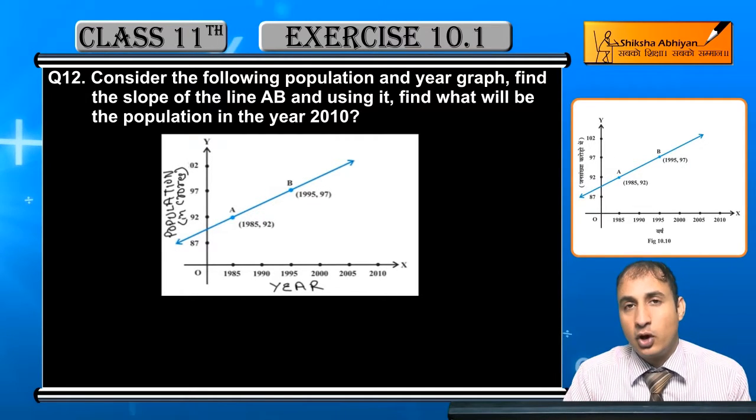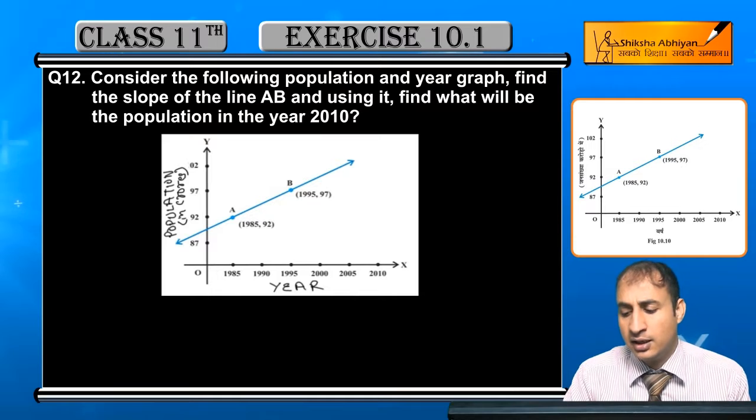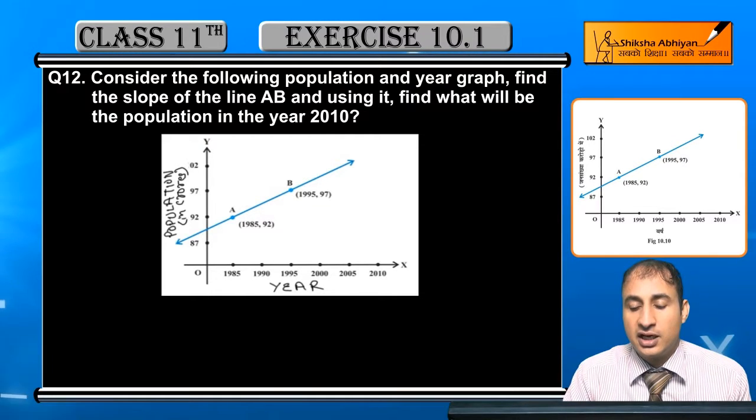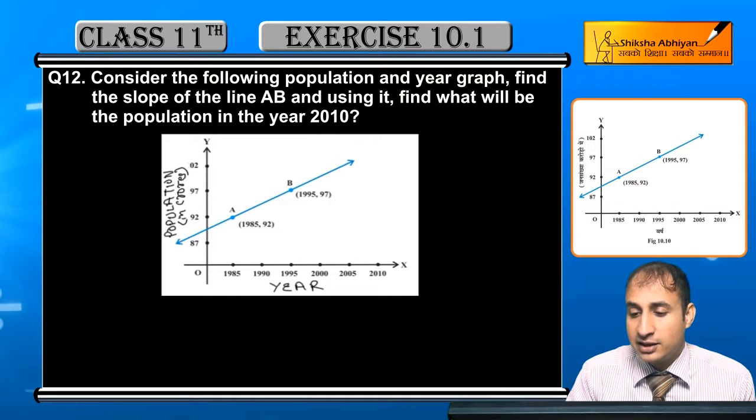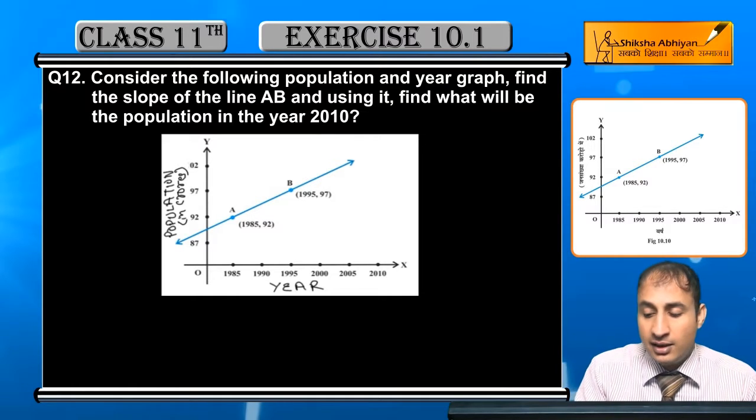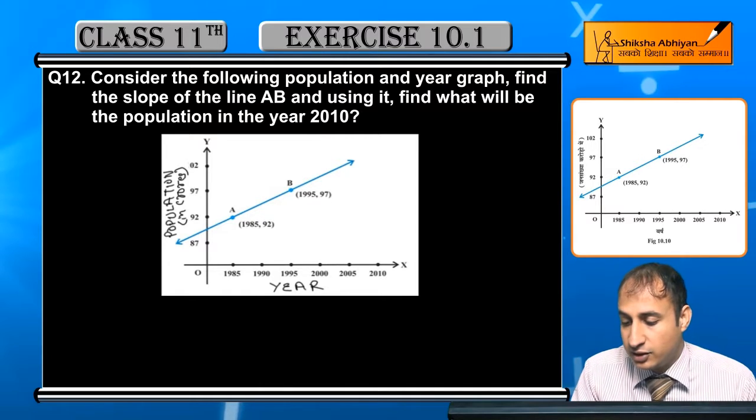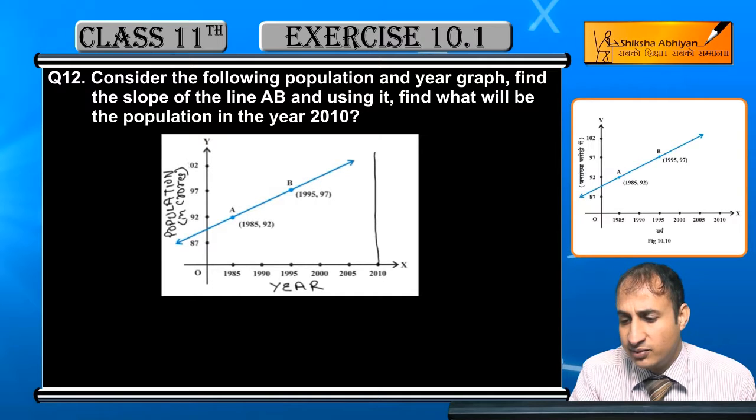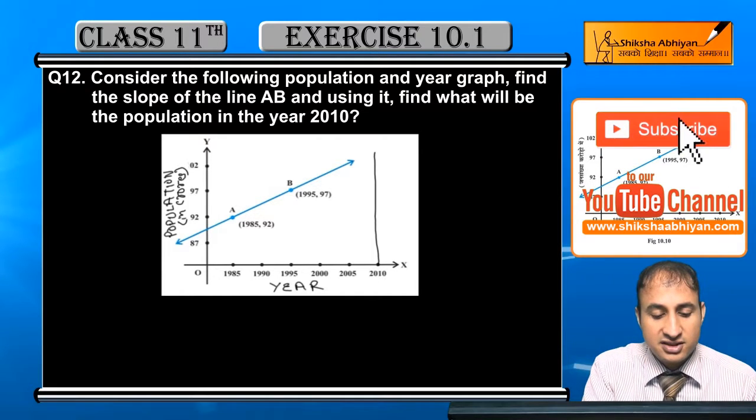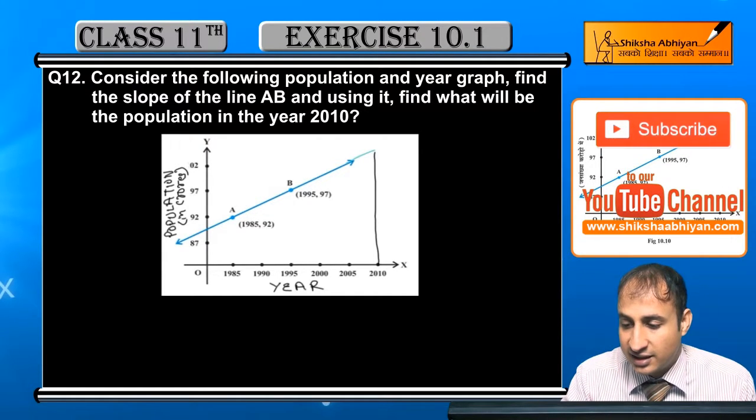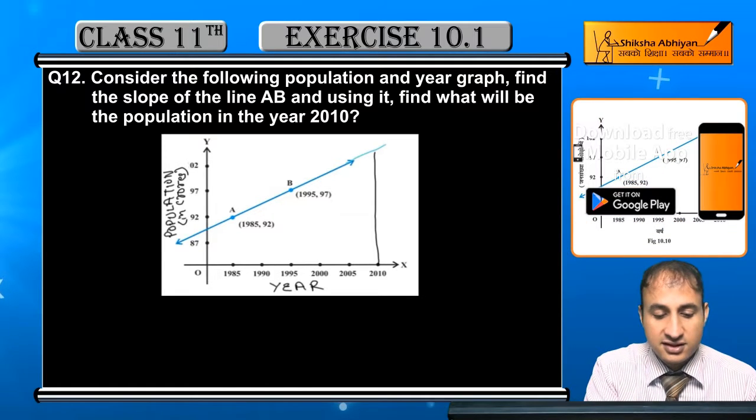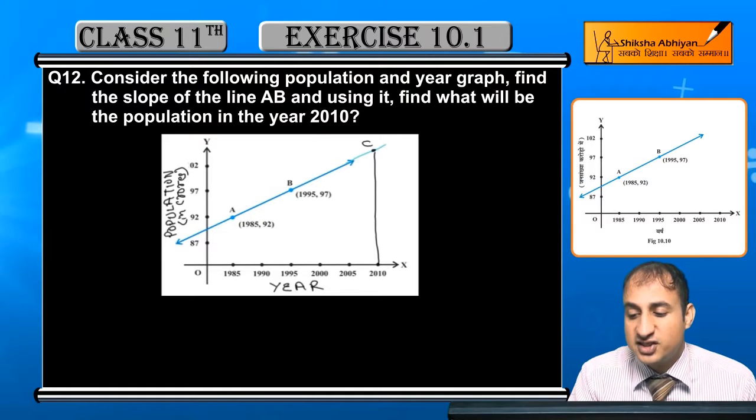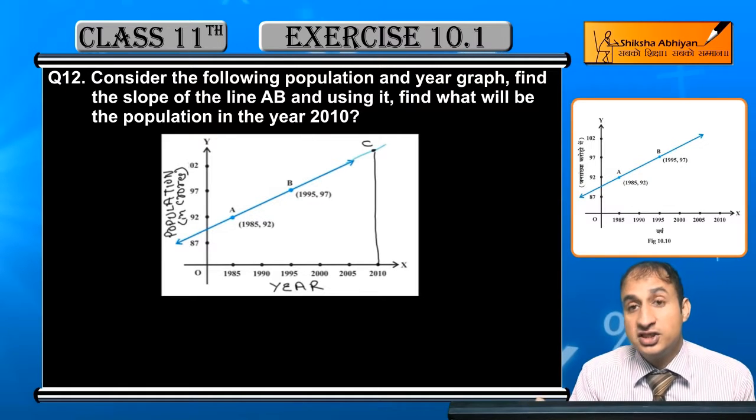I'll enlarge this image. You can see the graph with line AB. The B coordinates are easy for finding the slope. For 2010's population, if I draw a line here extending the graph, though it's not exact, this line will cut in the direction of the line at this point. We take this point C and the coordinates which I draw here.